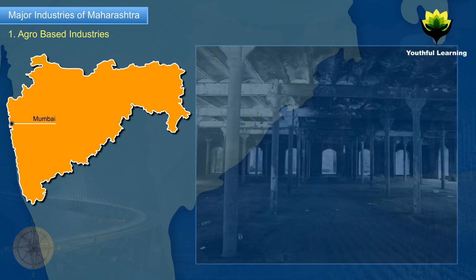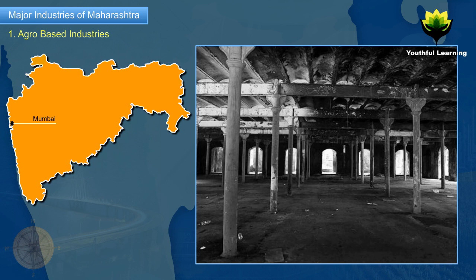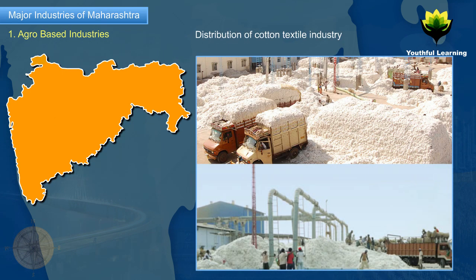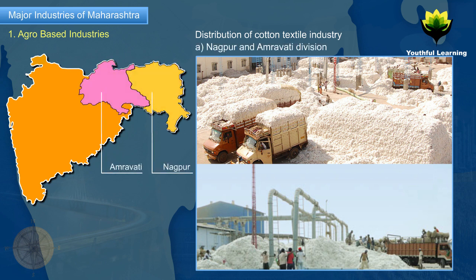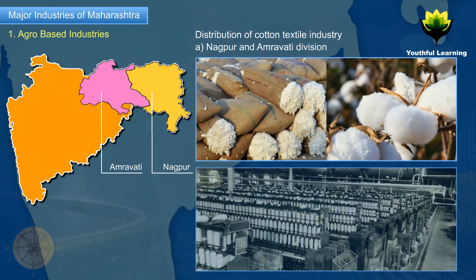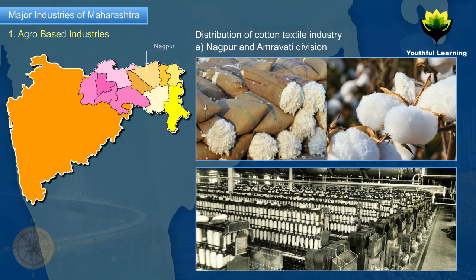Most of the cotton textile mills in Mumbai have since shut down. Distribution of cotton textile industry — Nagpur and Amravati Division: Due to easy availability of raw material, cotton textile mills were set up at Nagpur, Hinganghat, Akola, Pulgaon, Badnera, and Achalpur cities of the Vidarbha region.